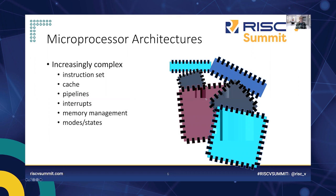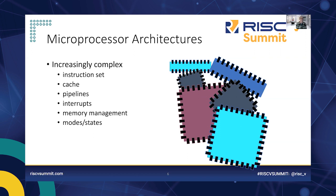One response to this is to look at microprocessor architectures. Microprocessors have now existed for half a century — 50 years of development. Things are becoming more complex: instruction sets are more complex, there are complex cache and pipeline designs to improve performance, interrupt structures can be incredibly complex, memory management helps protect software, and processors can have numerous modes and states.